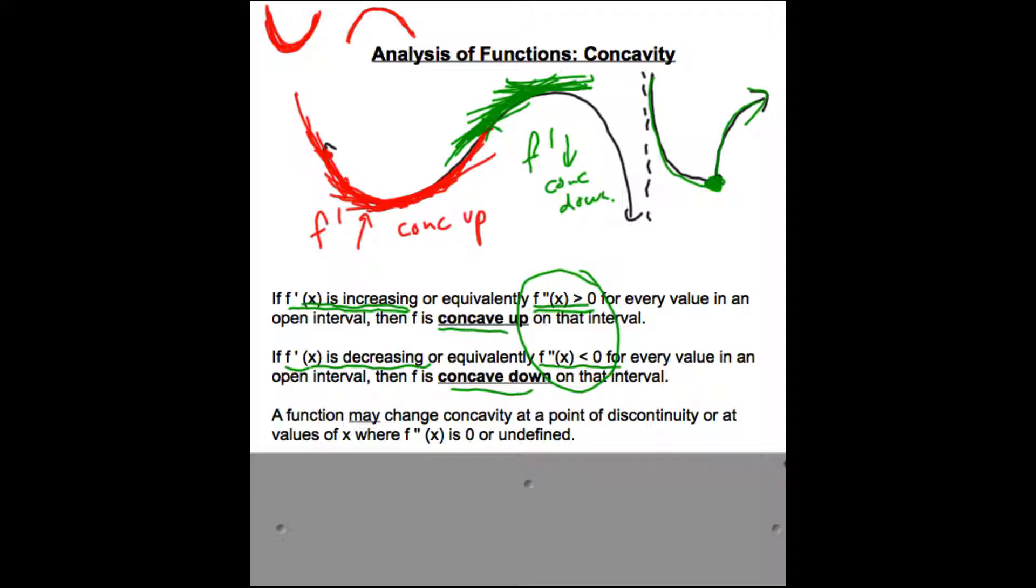So concavity could change, doesn't always, but it could, as well as points where the function is discontinuous. So for example, the asymptote, we're going from a concave down part to a concave up part.